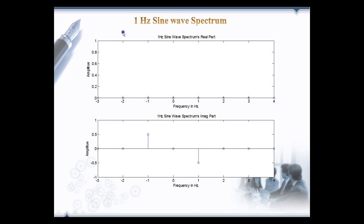Next let's take a unity amplitude sine wave spectrum and then reconstruct the time domain signal from it. This is the real and imaginary part of the spectrum. Real part is zero, imaginary part is non-zero amplitude of 1/2 at minus 1 Hz and minus 1/2 at 1 Hz.